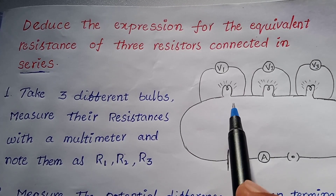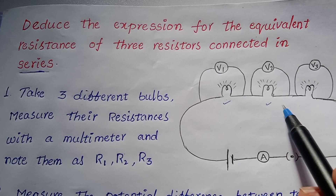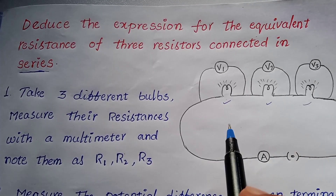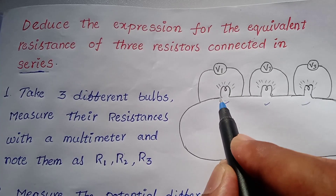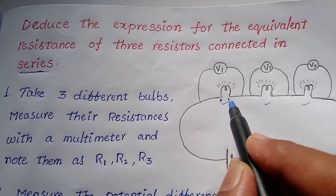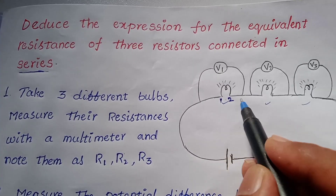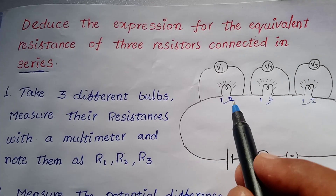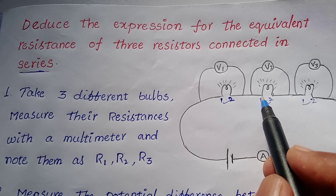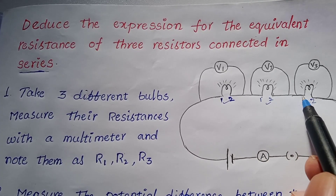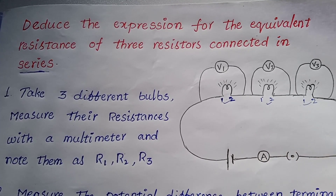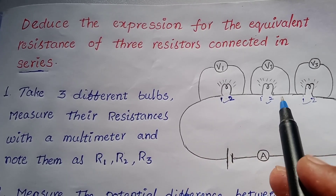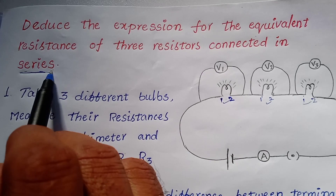Let's see — here I am taking three bulbs. A, B, C are three bulbs. We will connect these three bulbs; this is the first terminal and second terminal. The second end is connected to the first end, and the second end is connected to the first end — this is a series connection.